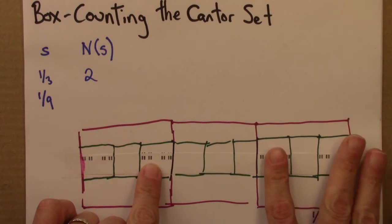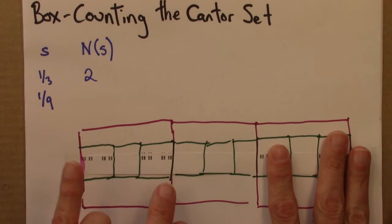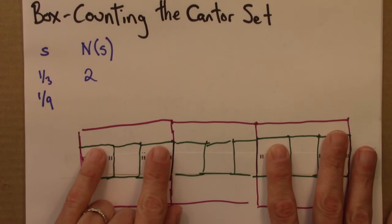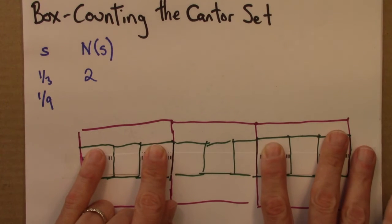Well, one, two, three, four. And if I just use these four squares, the shape is covered.